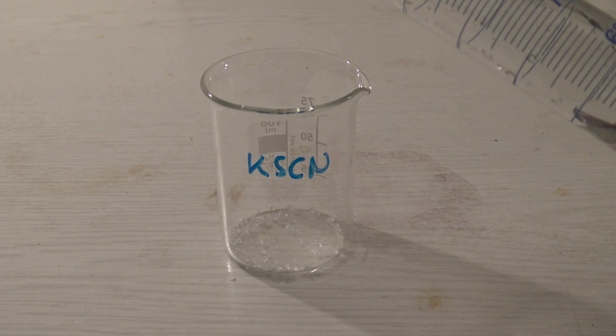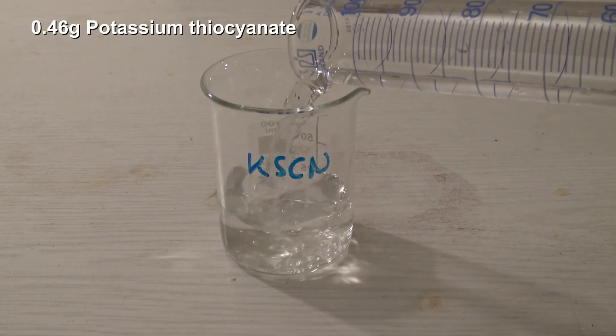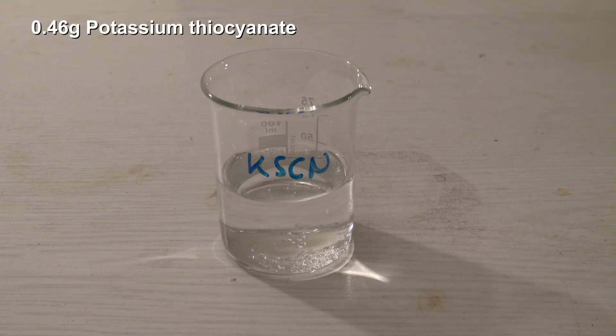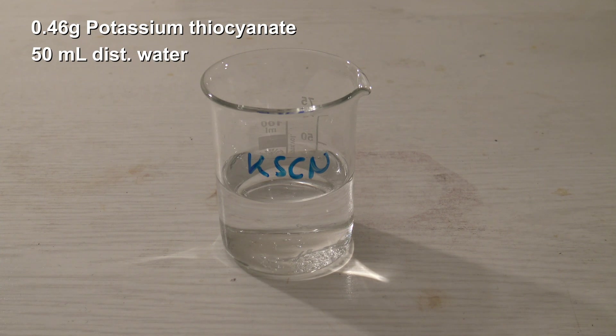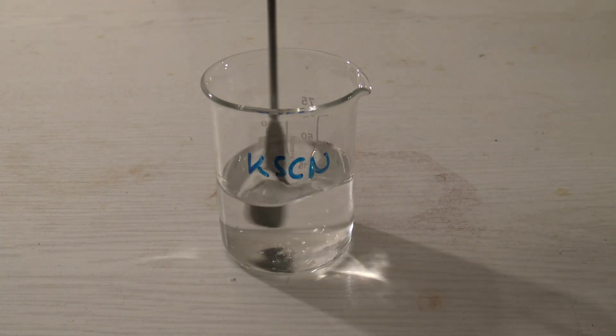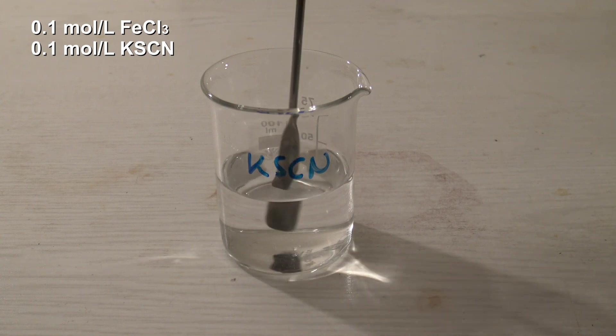For the second solution, 0.46 grams of potassium thiocyanide were also dissolved in 50 milliliters of distilled water. Both solutions should have a concentration of around 0.1 moles per liter.